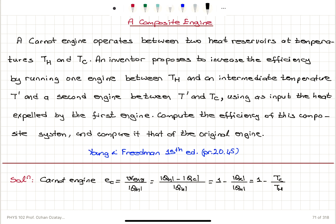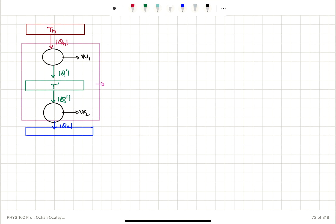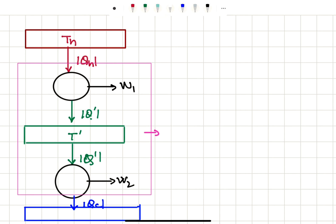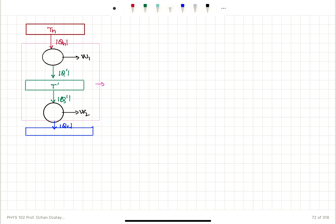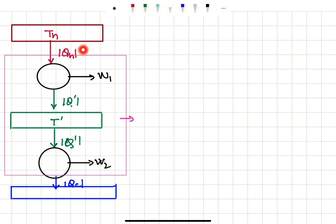That is the efficiency of the Carnot cycle. Now let's go with this inventor's proposal. We have a composite engine consisting of one Carnot engine operating between Th and T'. This engine absorbs heat QH, does work W1, and expels heat Q'. This Q' is absorbed by the second engine, which does work W2 and expels heat QC to the cold reservoir at temperature Tc.